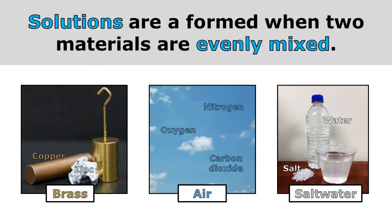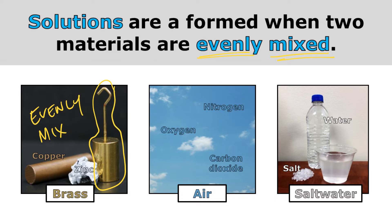Solutions are formed when two materials are evenly mixed together. We normally think of solutions as being liquids, but it's important to understand that being evenly mixed is what makes something a solution. When I take copper and zinc and melt them, and evenly mix the melted metals together, I end up with brass. That's how brass is made — so technically that alloy, that brass, is a solution.